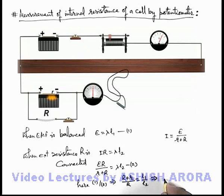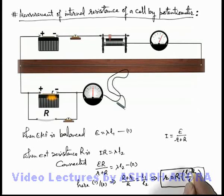If we further simplify this expression, here we can see the value of internal resistance of the battery will be R times L1 minus L2 upon L2. This is the expression we are getting, and here L1, L2 we already obtained.